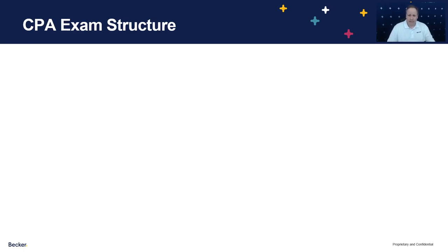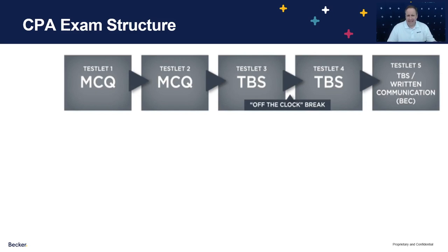First and foremost, we need to talk about testlets. Although it is a CPA exam designed to go over four hours, it really is five shorter exams given sequentially — testlets one, two, three, four, and five in that order. Regardless of the section, the first two are always multiple choice. The question amounts vary slightly, but they're always going to start with multiple choice. That's going to be followed by three testlets — three, four, and five — that are called TBSs, or task-based simulations. You can think of these as more extended problems.